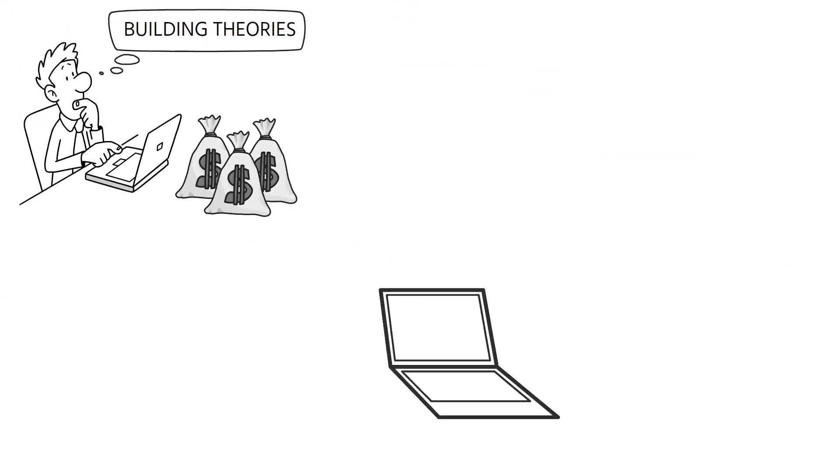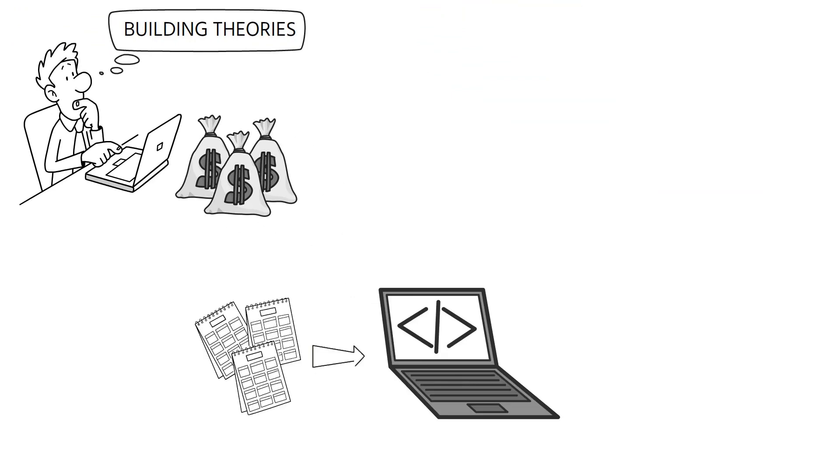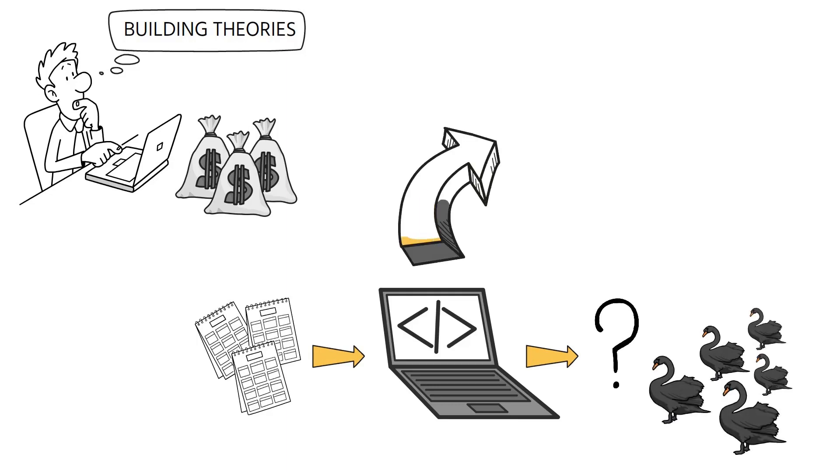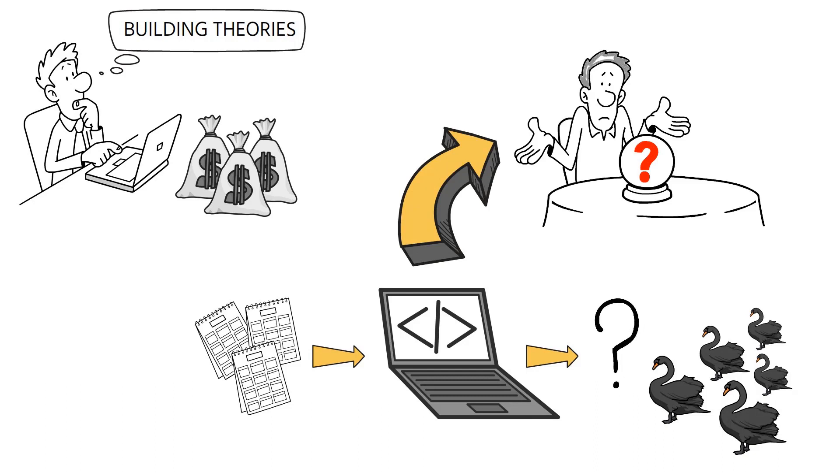Machine learning algorithms trained on historical data cannot predict the future because the future is full of unprecedented black swans. Machine learning's real power lies in building and testing causality theories that cannot only predict such events, but also profit from them.